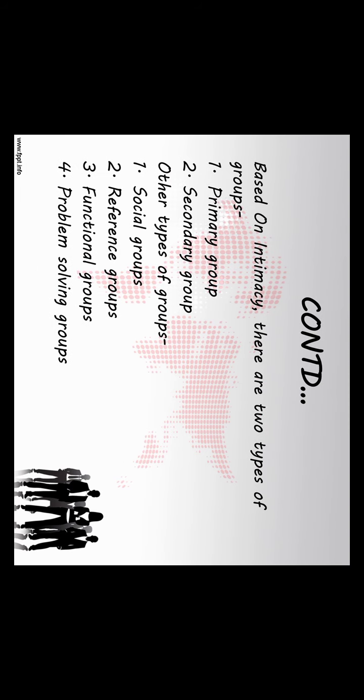Based on intimacy, there are two types of groups. Primary groups are characterized by small size, face-to-face interaction and intimacy among members, for example family and neighborhood groups. Secondary groups are characterized by large size and individual identification with the values and beliefs prevailing in them rather than direct cultural interaction, for example occupational associations and ethnic groups.